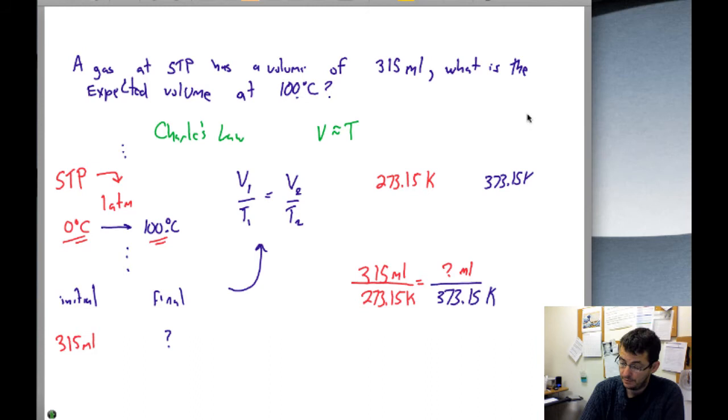So multiplying both sides by 373.15 Kelvin, we get the following. Kelvins cancel, leaving us with our final volume, V2 equal to 430 milliliters.